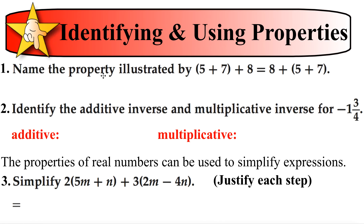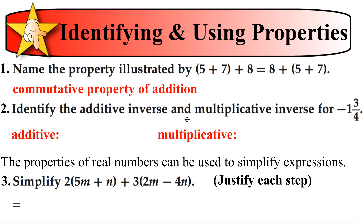In the next slide, it says name the property that's illustrated. This one is 5 plus 7 plus 8 equals 8 plus 5 plus 7. We're still grouping the 5 and the 7 — we haven't changed the grouping. What we did was change the order; we added the group first here, and second there. So that is actually the commutative property of addition.